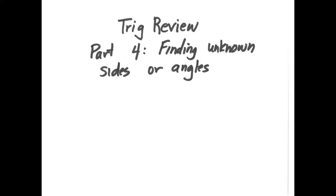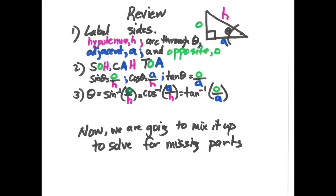In this last video for the trig review, we're going to find unknown angles or sides. From the previous review, we learned how to label sides correctly by labeling the hypotenuse, an arc through the angle of interest — which we'll call theta — the adjacent side, A, and the opposite side, O.